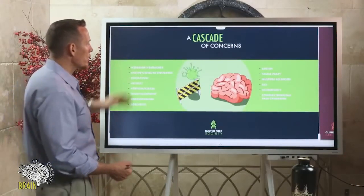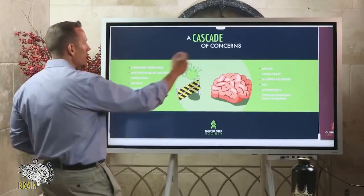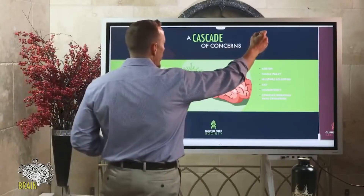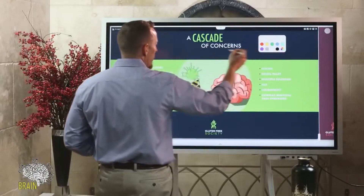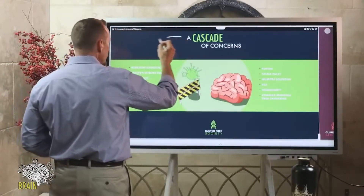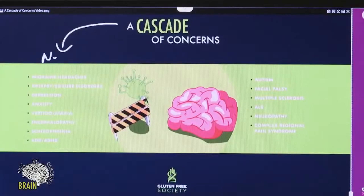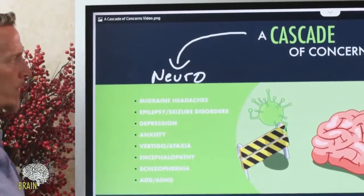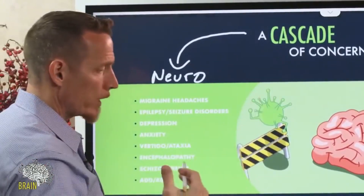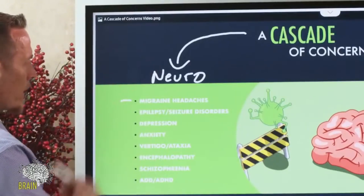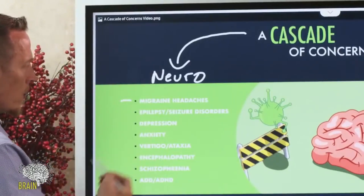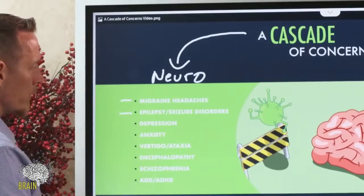What happens when we have a leaky brain is this entire cascade of things can begin to happen. Neurologically speaking, we develop a host of different types of problems when we have a leaky brain, or at least we increase the risk for developing these problems. You see here: migraine headaches, epilepsy, or seizure disorder.